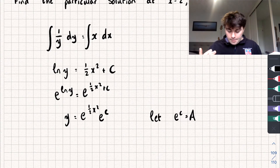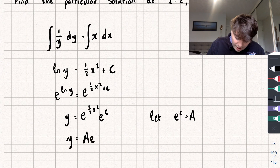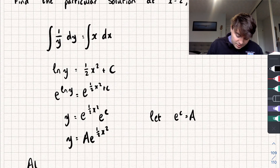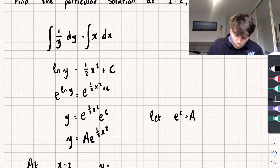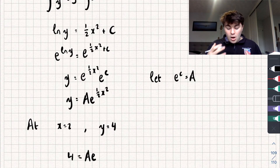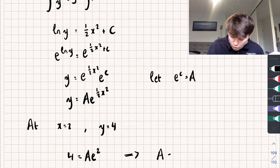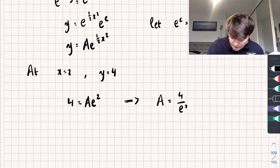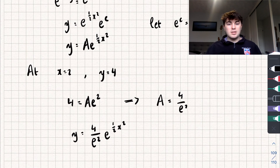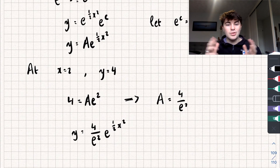Since e to the c is just another constant, let e to the c equal A, so y equals A e to the power of one half x squared. Substituting in our initial values x equals 2, y equals 4: 4 equals A times e to the power of (half times 2 squared) equals A times e squared. Rearranging, A equals 4 over e squared. So the particular solution is y equals (4 over e squared) times e to the power of one half x squared. Hopefully this video was useful — like, subscribe, share, and check out my channel for more maths tutorials.